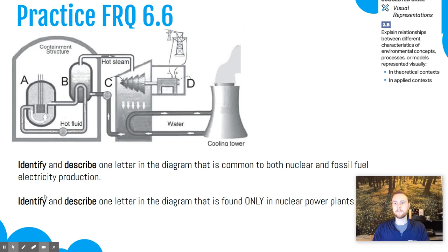Our practice FRQ for topic 6.6 involves looking at a diagram and identifying and describing one letter of the diagram that is common to both fossil fuel and nuclear electricity production. A second FRQ asks you to identify one letter in the diagram that is found only in nuclear power generation. Make sure to describe both of these features of the diagram.